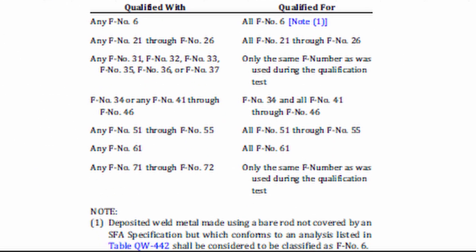For the filler metal classifications below the table, it is straightforward. For example, if you qualify with F6, then you are qualified for all F6 filler metals. Similarly, if the welder qualifies with F21, then he or she is now qualified from F21 to F26.